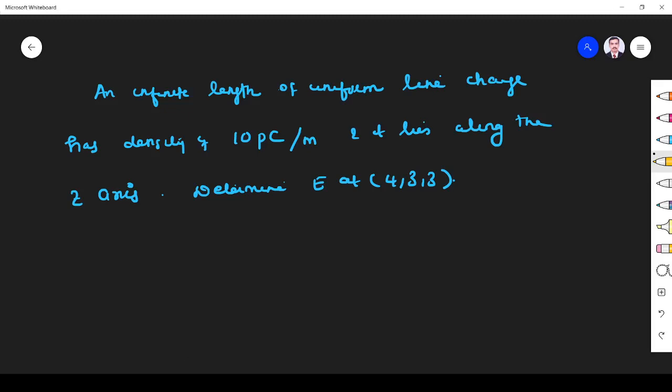Hi students. Welcome to the problem solving session on electric field due to line charge. Let us see this problem. An infinite length of uniform line charge has density 10 picocoulomb per meter. So line charge density, notation ρL, is 10×10^-12 coulombs per meter, and it lies along the z-axis.